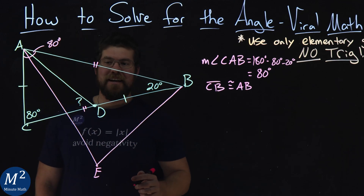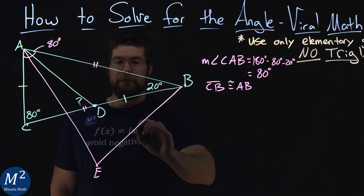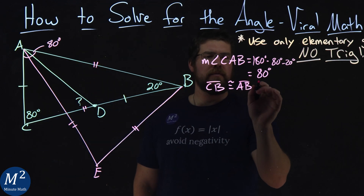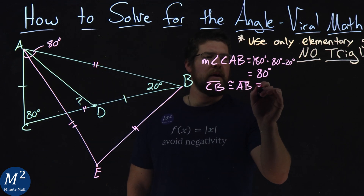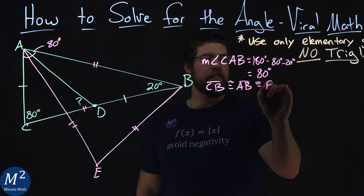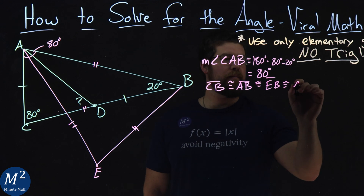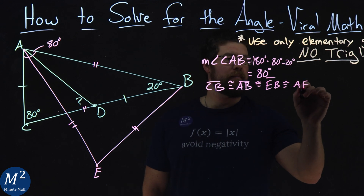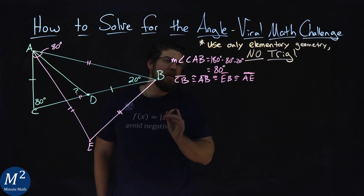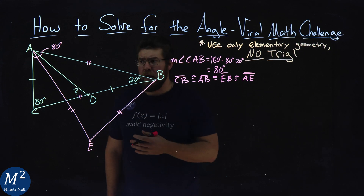This equilateral triangle is not drawn to scale, but all sides have the same length as AB. So length AB is congruent to length EB, which is congruent to length AE.